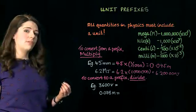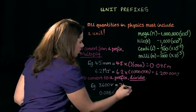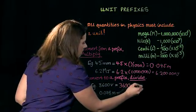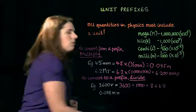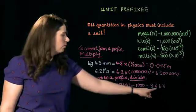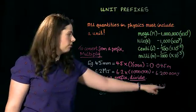I need to divide by the value for kilo, which is a thousand. So 3600 divided by 1000 equals 3.6 kilovolts. And you can see that I've written it with the symbol for the prefix and then the usual symbol for volts, so kilovolts.